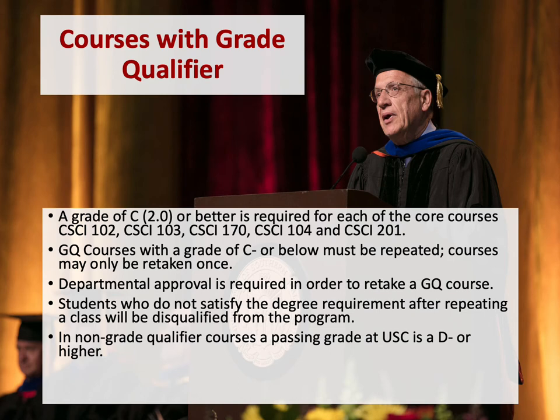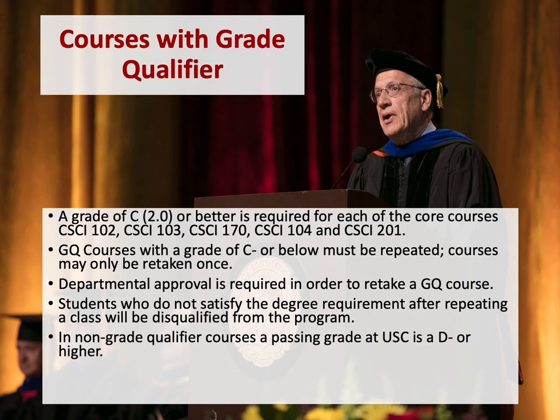The Computer Science Department lists its core courses as grade qualifier courses. The following courses require a C grade or higher in order to be considered passing: CSCI 102, CSCI 103, CSCI 170, CSCI 104, and CSCI 201. Students who receive a grade of C- or below in these courses will need to repeat the course. This course will only be able to be retaken once. A student who does not pass the course the second time may be disqualified from the computer science program. For non-grade qualifier courses, according to USC policy, a grade of D- or higher is required to pass.